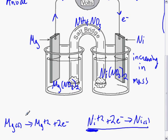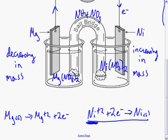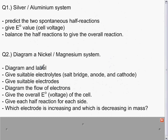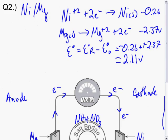And this electrode, as it's being used up, is decreasing in mass. Let's just double-check that we've answered the question fully. We've diagrammed and labeled it. We've given the anode and the cathode. We have the salt bridge, the suitable electrodes, flow of electrons, overall E° value, half-reaction for each side, and we've done the increase and decrease in mass. So overall, this question is now finished.